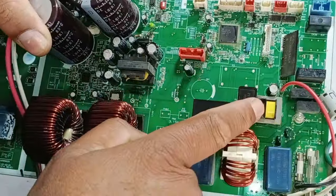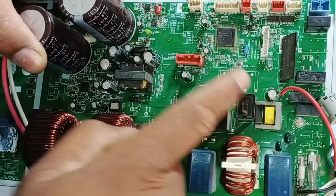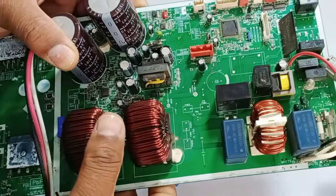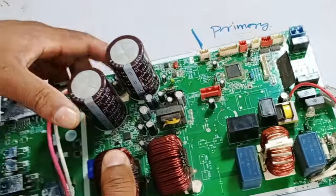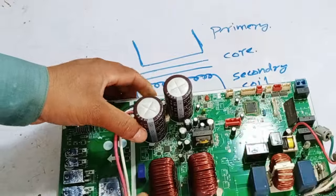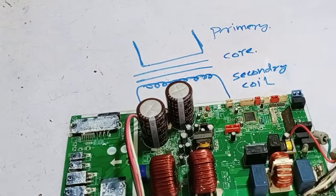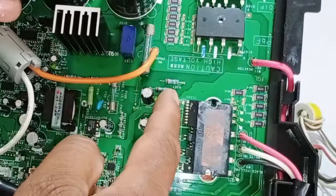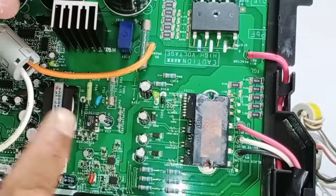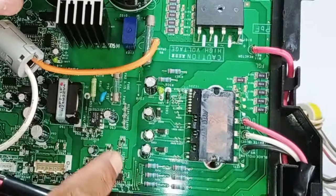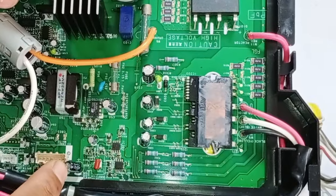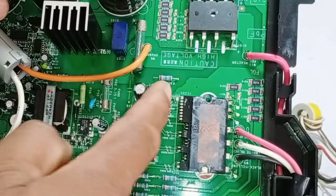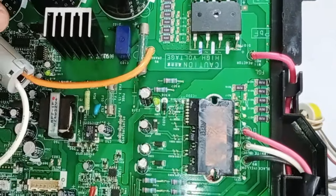The current transformer is used separately in this circuit board. However, this current transformer is not used on every circuit board. In those circuits, shunt resistors are used to measure the current on the load. A shunt resistor is a fixed resistor that measures the current flow in the circuit.